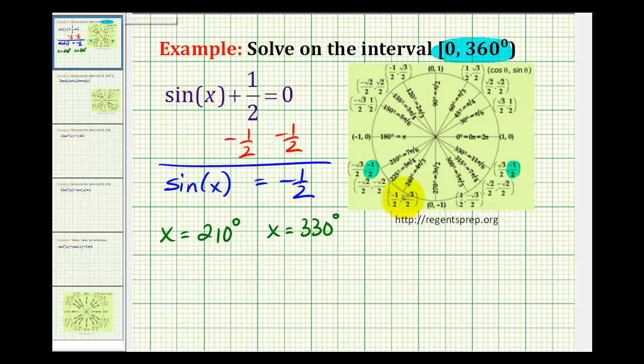The other main method for solving this equation would be by using reference triangles. When we isolated the function here and we had sine of x equal negative 1/2, the ratio of negative 1 to 2 or just 1 to 2 should remind you of a 30, 60, 90 triangle where the sides are a multiple of 1, 2, square root 3.